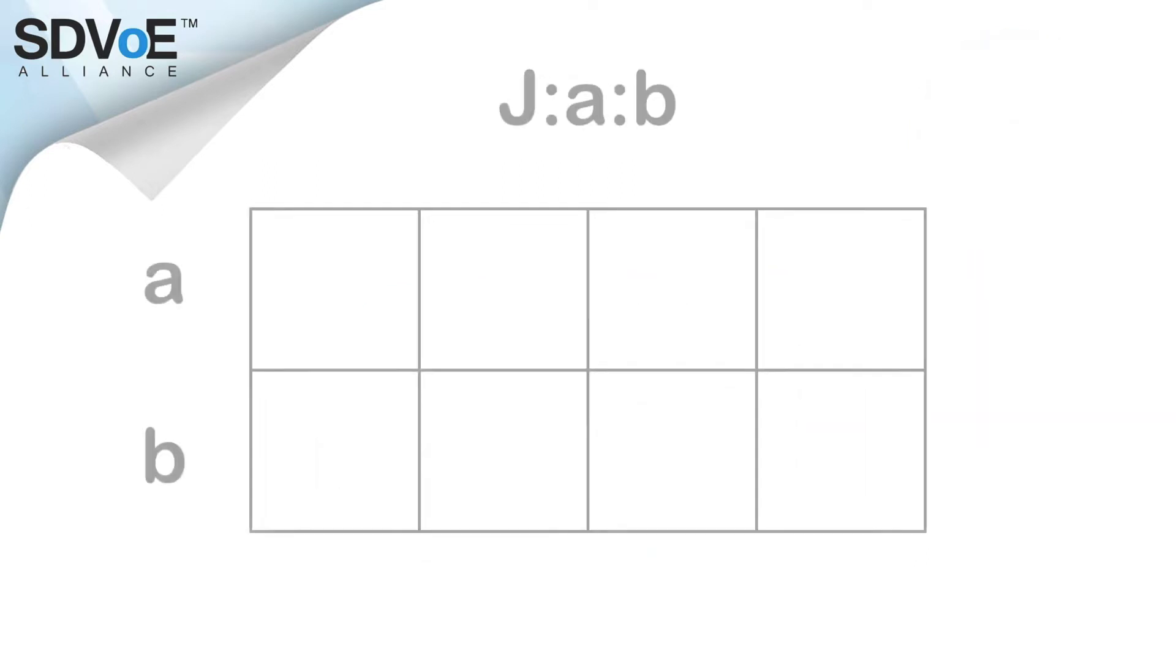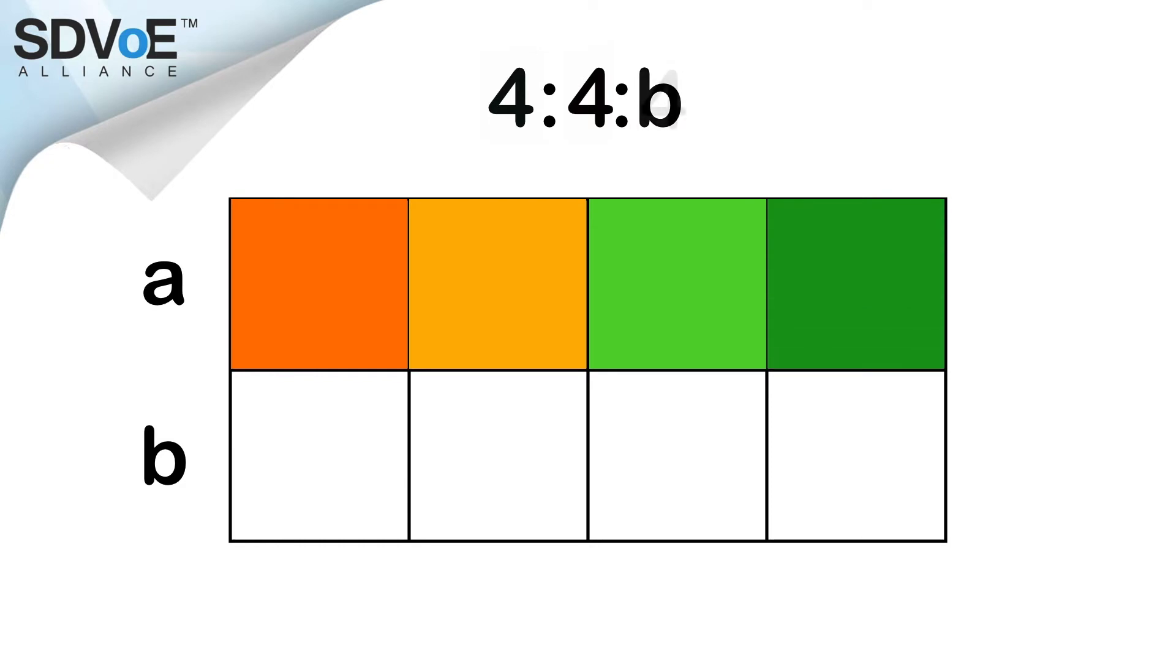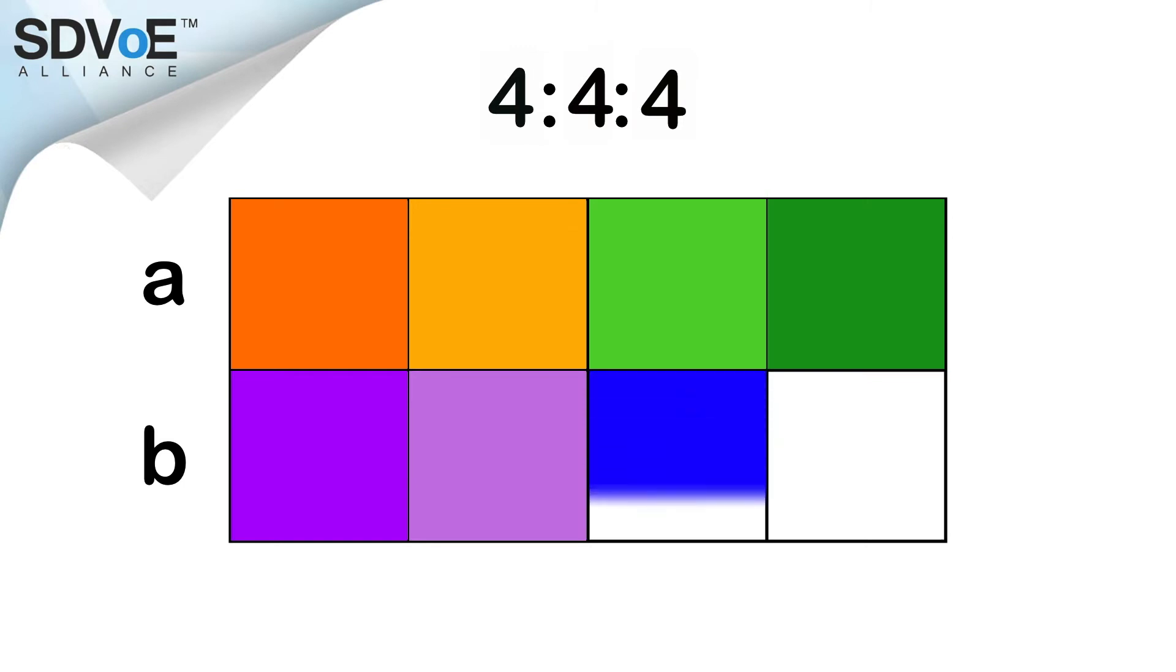Now, let's imagine that each pixel is able to display its own color. Our J value is 4, because we have 4 columns of pixels. Row A would also be 4, because each pixel in that row has its own color data. And row B would also be 4, because as with the row above it, each pixel has its own color data.